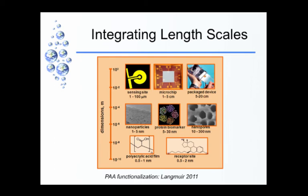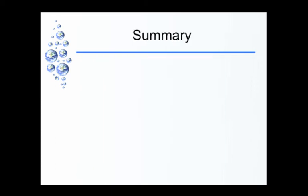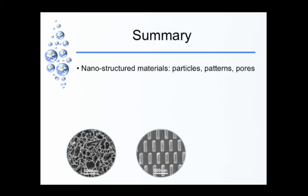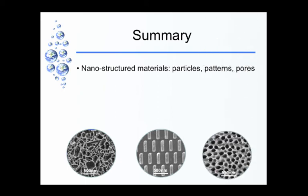To summarize: nanostructured materials — particles, patterns, pores. I glossed over patterns and sintered materials and some lithography techniques for time purposes, but I covered porous structures. Polymers, metals, ceramics — you can make these out of almost any combination of materials.